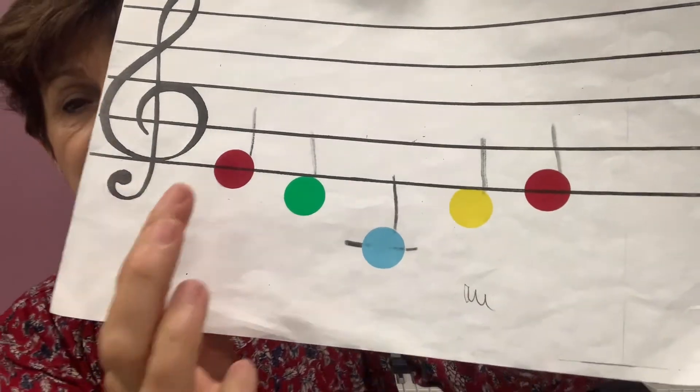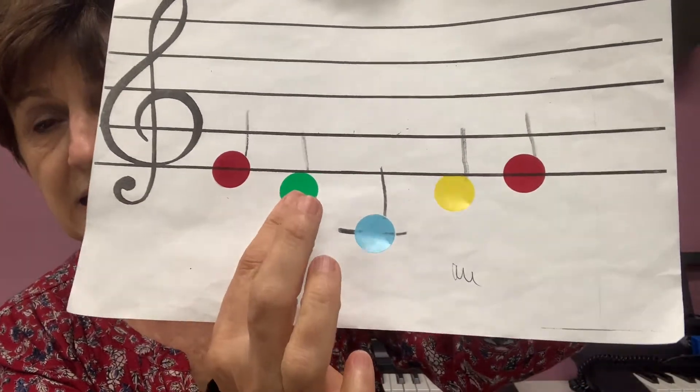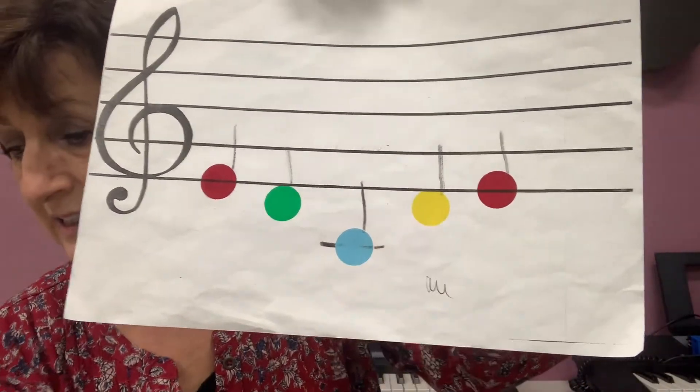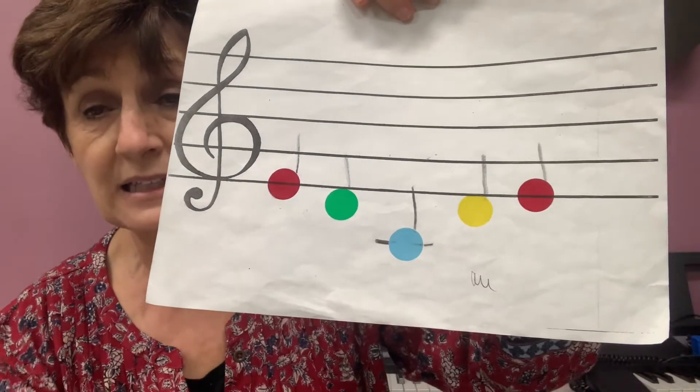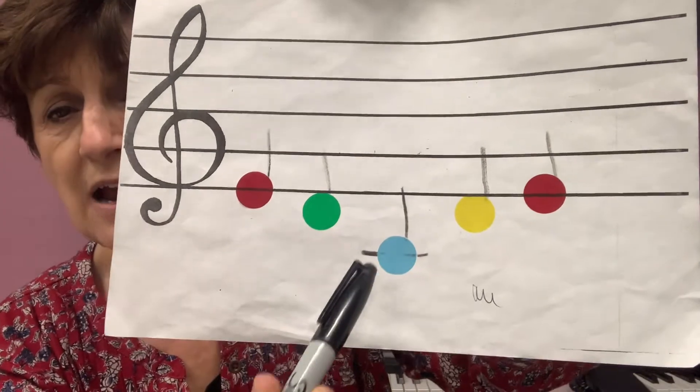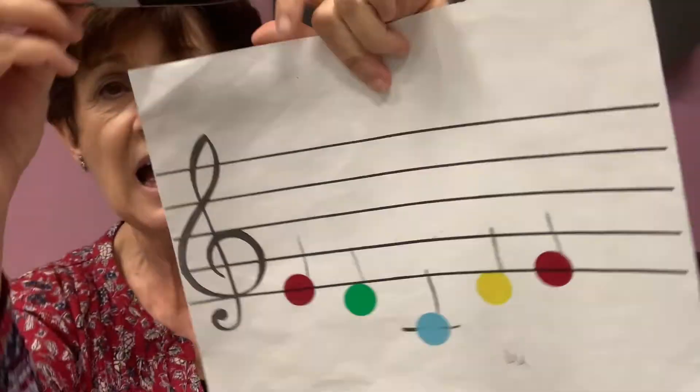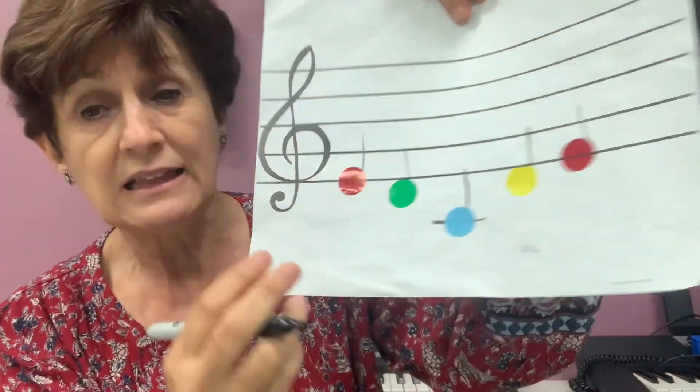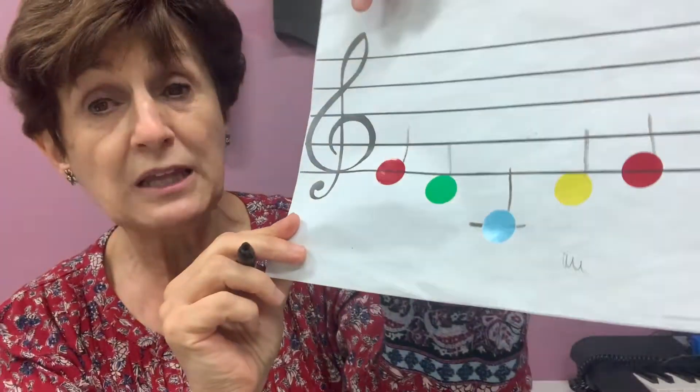First I made my stickers and I made E, D, C, D, E. Then I took a pencil or a marker and I put the sticks so they look like quarter notes. And look what I did on the C. I put the hat. Once you have it, you can put the letters.